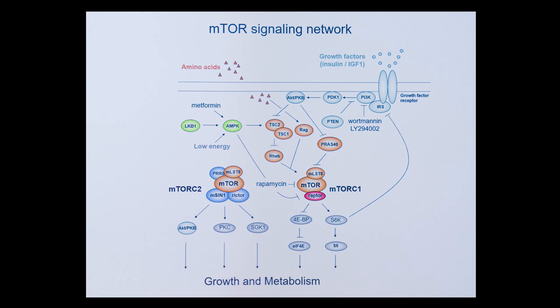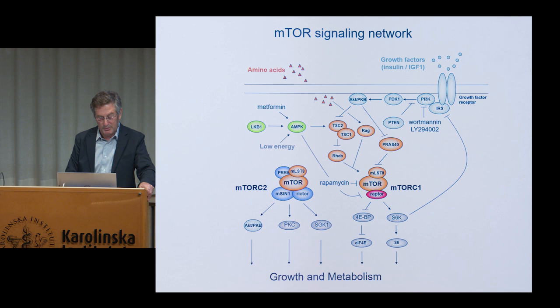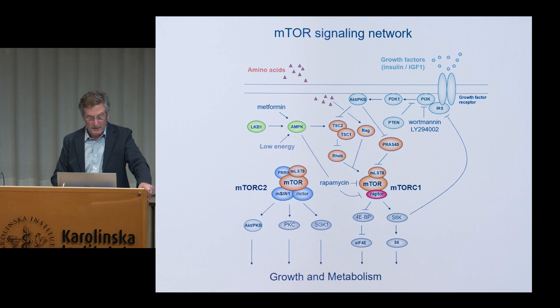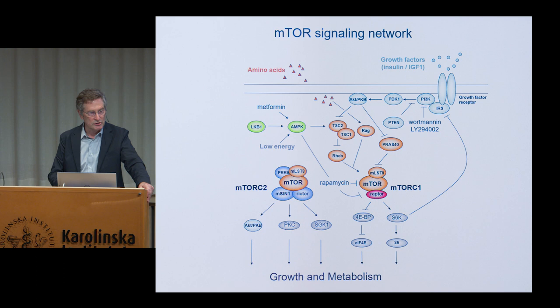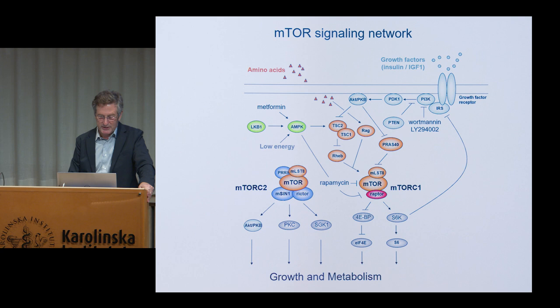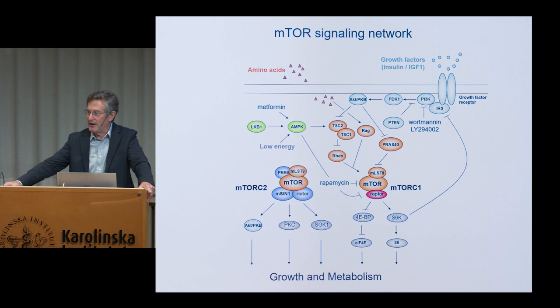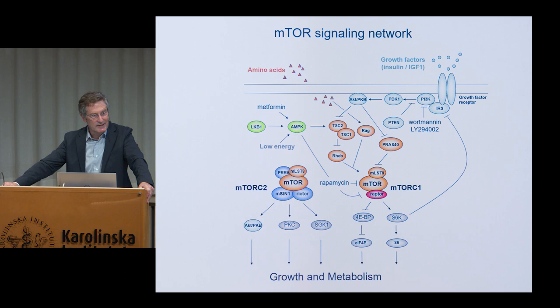Like TOR itself, which is conserved all the way from yeast to mammals, these two complexes are also conserved all the way from yeast to mammals. In fact, the entire architecture of the network is conserved all the way from yeast to mammals. So the picture that's emerged is that this is a primordial or ancestral signaling network which has been conserved throughout eukaryotic evolution to control this very fundamental process of cell growth. The exception is this part of the network — the growth factor signaling pathway — which evolved later with multicellularity and was then grafted onto these more primordial TOR signaling components which already existed in unicellular yeast.